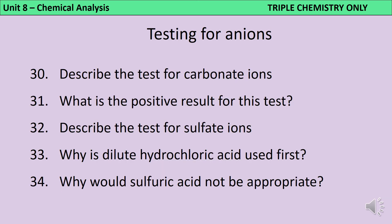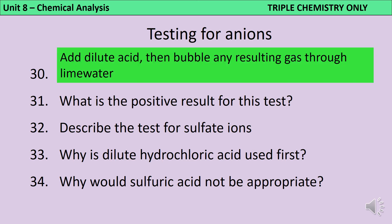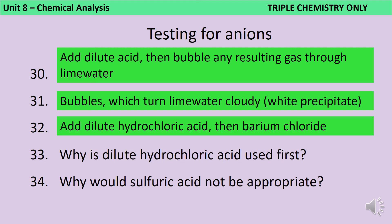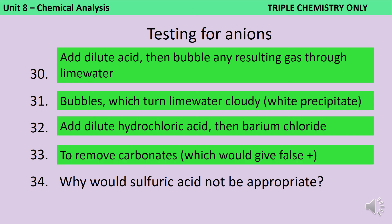The test for carbonates is to use a small amount of acid and then bubble the resulting gas through lime water, which will then turn cloudy as it produces a white calcium carbonate precipitate. To test for sulphate ions, you use barium chloride, but first you need to add a small amount of hydrochloric acid. This hydrochloric acid will break down any carbonate ions that are also in the solution, preventing a false positive. You couldn't use sulphuric acid, because by doing so you would be adding sulphate ions to the substance you're trying to test.